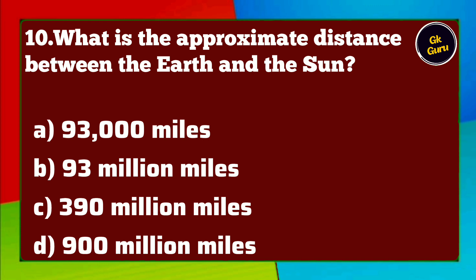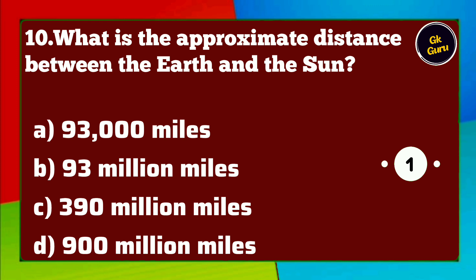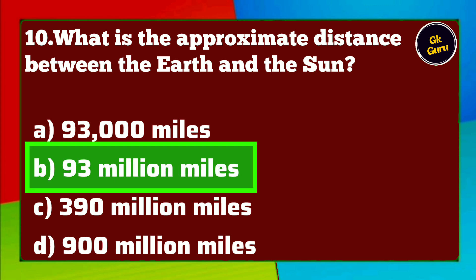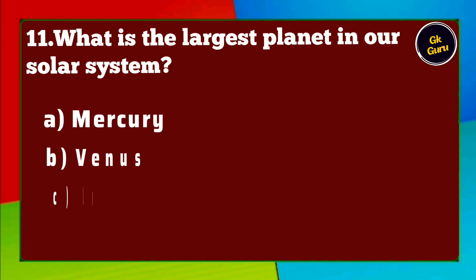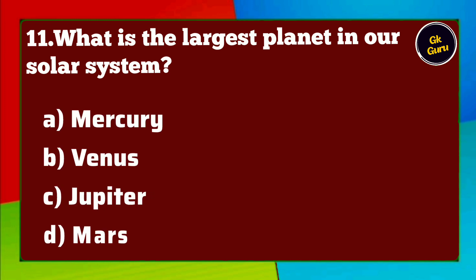What is the approximate distance between the Earth and the sun? A. 93,000 miles B. 93 million miles C. 390 million miles D. 900 million miles. Answer B. 93,000,000 miles.